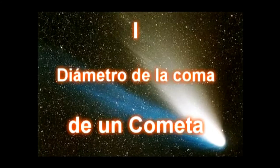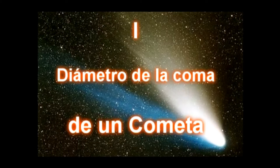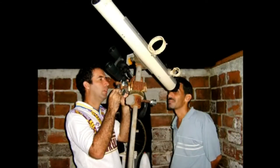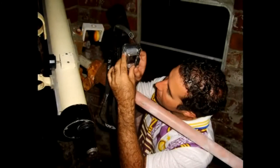Pasaremos a explicar cómo se determina el diámetro de la coma. Este método puede emplearse tanto visualmente como mediante la fotografía astronómica. Tomemos, por ejemplo, el cometa 17P-Holmes. En esta imagen podemos observar al cometa 17P-Holmes dentro de un campo de estrellas. En caso de que tengamos su imagen fotográfica, podemos trazar una línea que mide el diámetro de esta coma.